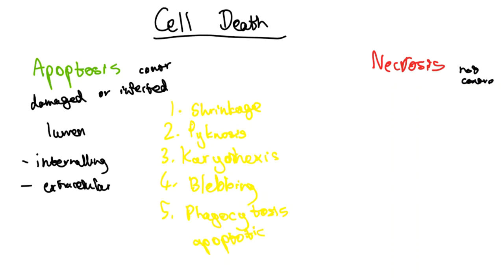Now let's look at necrosis. It's uncontrolled, unregulated cell death, and this is generally due to external factors such as infection, tissue damage, a cut — something generally not controlled by the cells. And why is necrosis bad? Generally the cell just swells up and bursts, releasing its contents to the surrounding area. Some of these contents can actually be toxic in the surrounding environment, leading to damage to surrounding cells as well and necrotic tissue forming. Necrotic tissue is really bad — you can search up some examples if you want, just maybe not while eating.